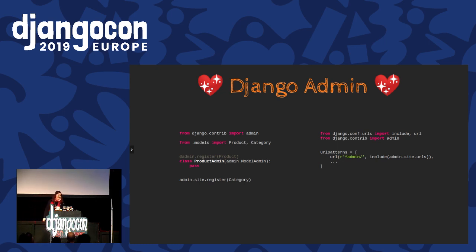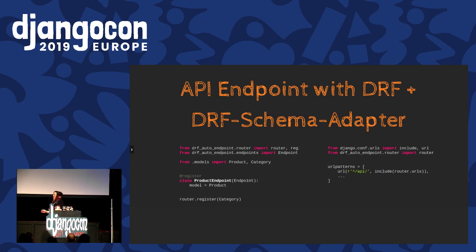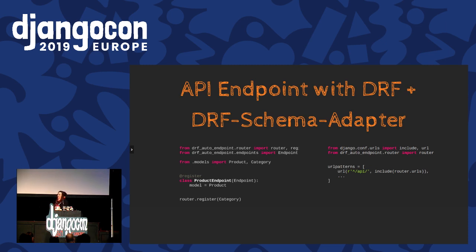And so this is how Dero Schema Adapter started. I wanted to be able to register and create some APIs as fast as I would have been able to create some admins. This is the code you would need to write to create a Django REST Framework API with Dero Schema Adapter. It works very similarly to the admin — you can register a model using a decorator or a special class, or just register a model directly on the router, and you just need to add this router once in the URLs. Then you have a fully working basic API that will do CRUD for all those models. All fields are exposed, everything is writable — this is not what you want for a production application, but it can get you started really quickly.